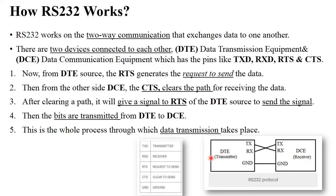In the working process, with the computer on one side and modem on the other: the first step is the DTE sends an RTS (Request to Send) signal to the DCE, meaning the computer signals to the modem that it wants to send data. The second step is when the DCE receives this request signal, the DCE uses the CTS (Clear to Send) signal — it clears all the path and becomes ready for receiving the data.